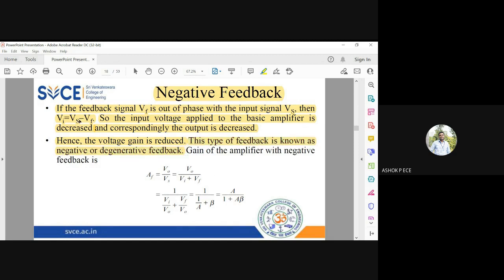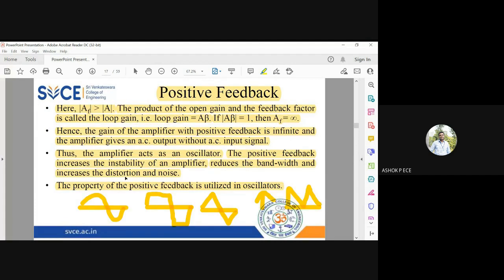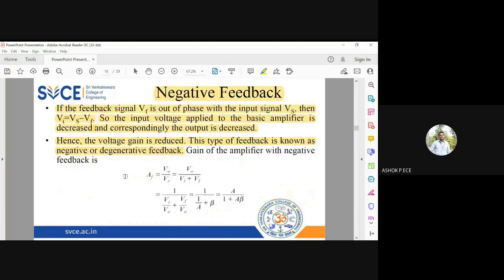This type of amplifier is called negative feedback or degenerative feedback. Negative because the subtraction is negative. Degenerative means it leads to reduction in gain. The gain voltage is getting reduced. So it is called degenerative feedback. Same way as we found the gain for positive feedback amplifier, now we are going to do the gain calculation for negative feedback amplifier.